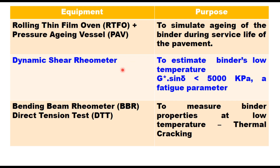The dynamic shear rheometer was developed to estimate the binder's low-temperature G* sine delta, and this value should be less than 5000 kPa — also called the fatigue parameter. The bending beam rheometer is a simple test that measures deflection in a beam of bitumen under constant load, determining creep stiffness and creep rate. Since the BBR cannot fully characterize some binders' ability to stretch before failure, the direct tension test measures ultimate tensile strength at low temperatures down to minus 30 degrees centigrade.